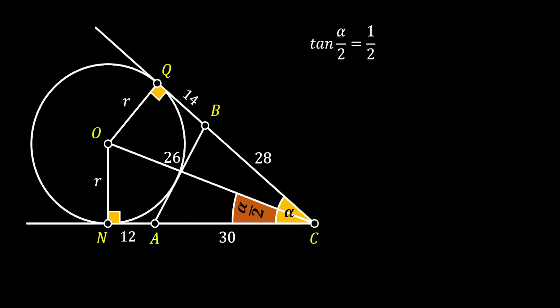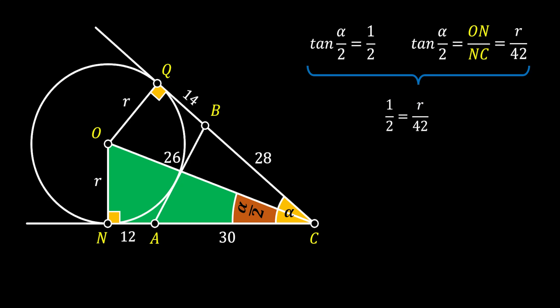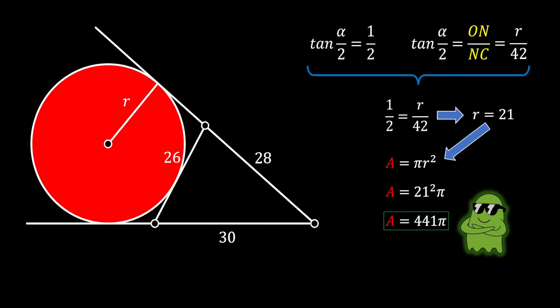Looking at right triangle ONC, we can use trigonometry to say that tan(α/2) equals the ratio of ON to NC. Substituting the values from our sketch, this equals R over 42. Combining our two equations gives 1/2 = R/42, which means the radius equals 21. The area of the circle is π r² = 21² π = 441π square units. Again, we have our solution.